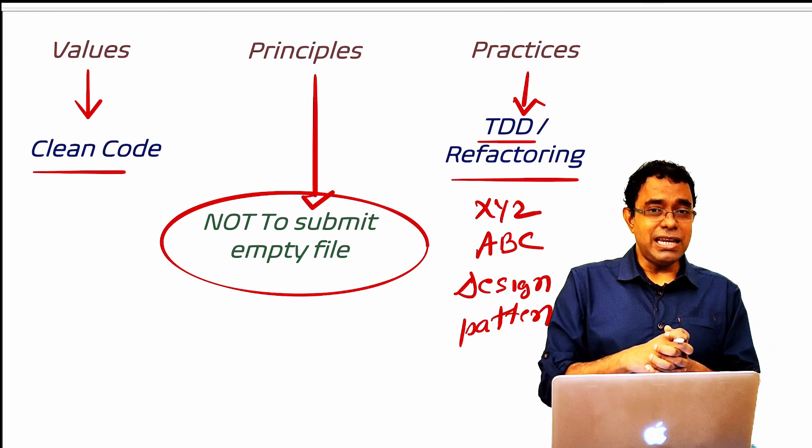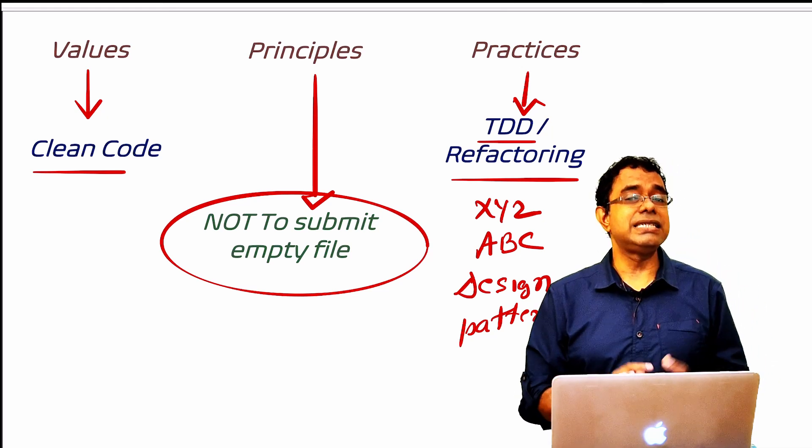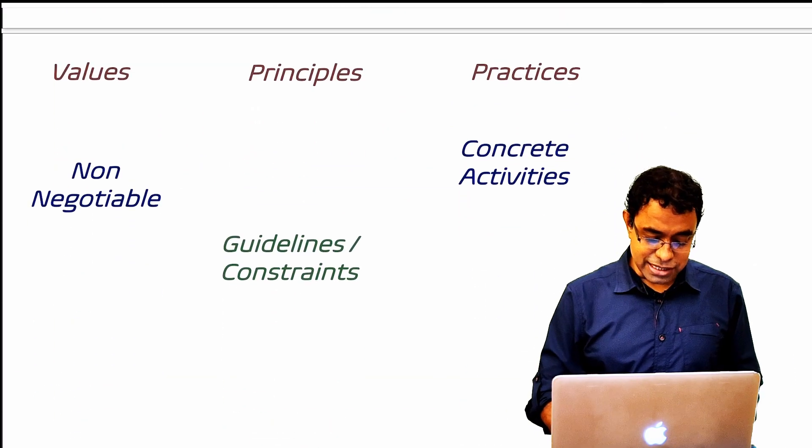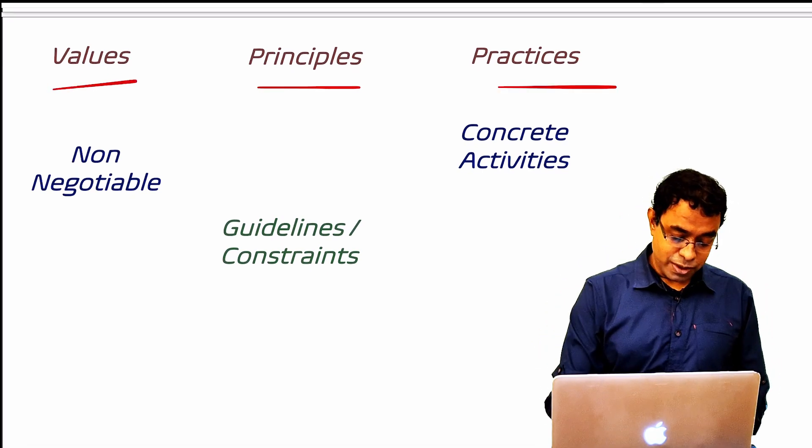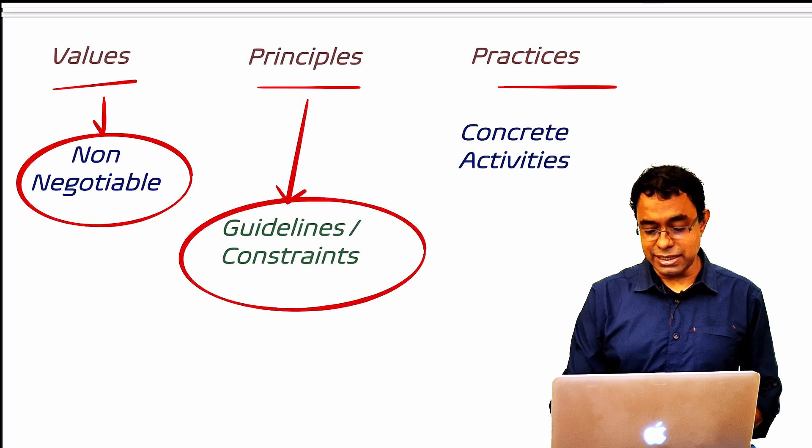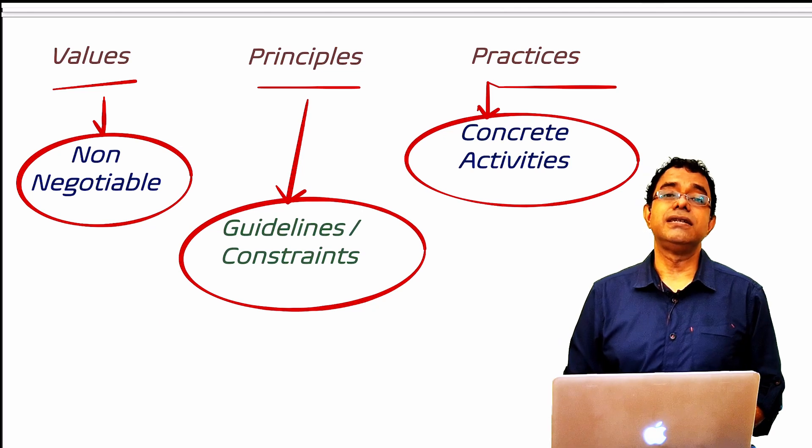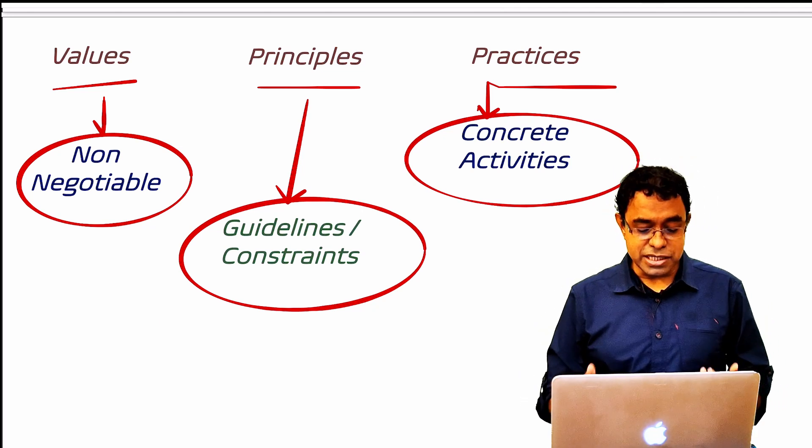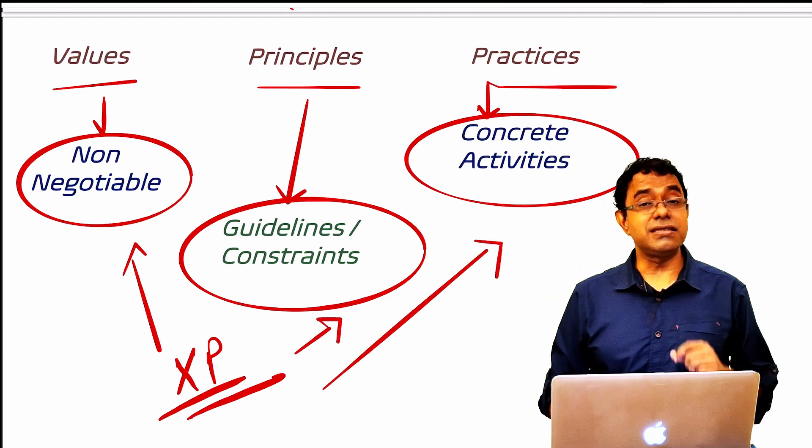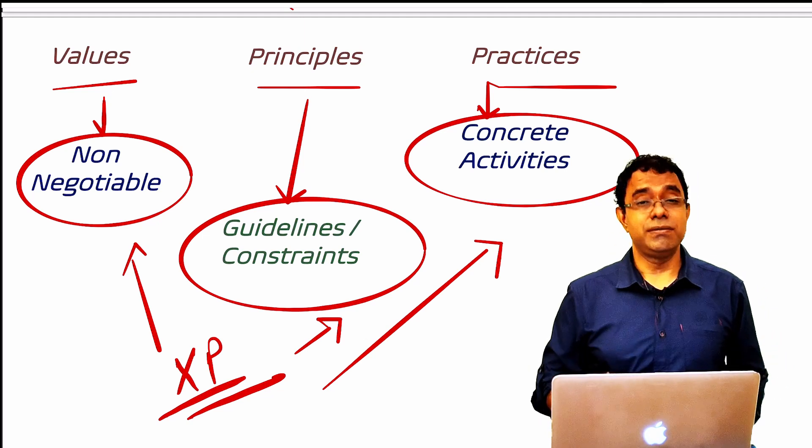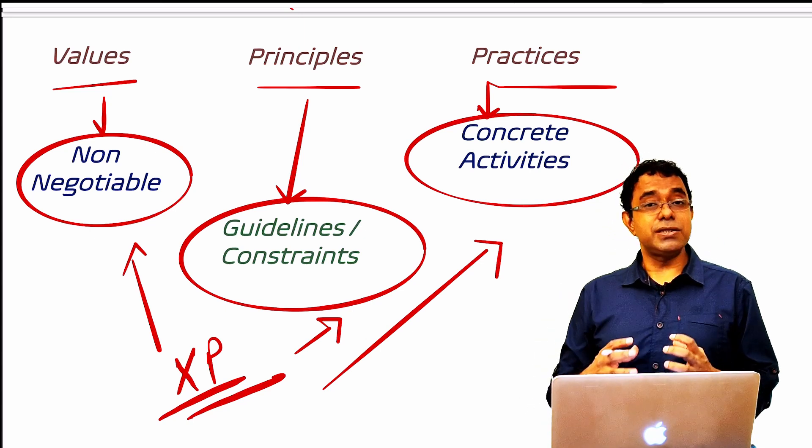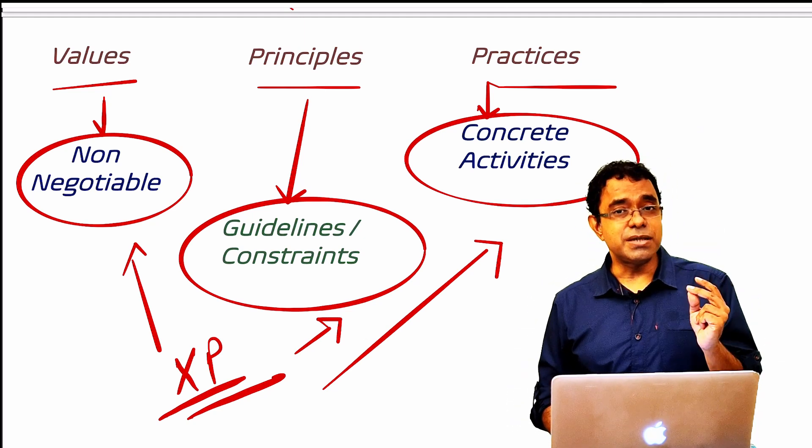So principles bind values and practices. Principle guides practices. Principles help you in realizing the value. So here is what is meant by values, principles and practices: values are non-negotiable, it cannot be negotiated. Principles are guidelines or constraints. Practices are concrete activities. So this is what XP provides. XP provides a set of values, principles and practices, the end result of which will be better code, better program, which in turn means better software, better product. So I hope you understood the basic foundation of extreme programming.